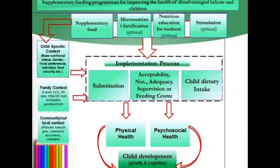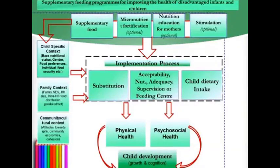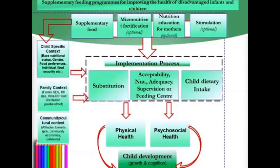All of those factors work through the implementation process. Supplementary food works really well and actually works best for lower-income children — those are the children that need to be brought up more. But substitution can affect outcomes, and other equity factors like inter-household distribution giving less to girls also affect it. Ultimately, the outcomes are physical health, psychosocial health, and better child development and life chances.